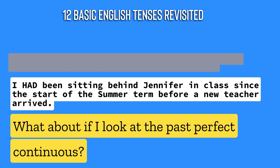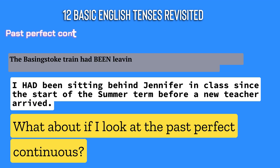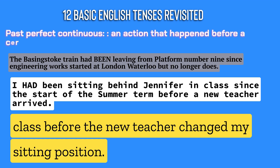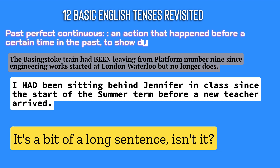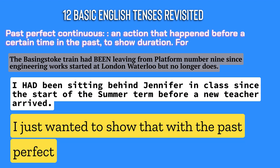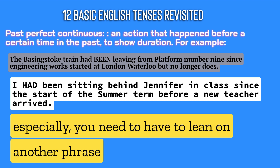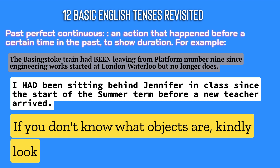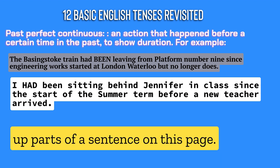What about the past perfect continuous? 'I had been sitting behind Jennifer for a year in class before the new teacher changed my sitting position.' It's a long sentence, but with the past perfect especially, you need to lean on another phrase or clause. If you don't know what objects are, kindly look up 'parts of a sentence' on this page. Don't forget, we have a subject and an object.